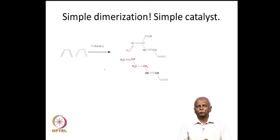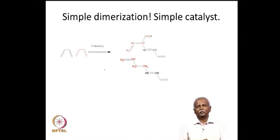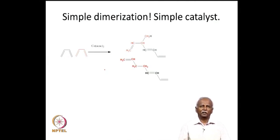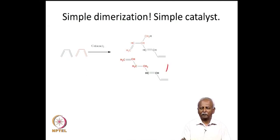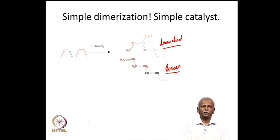Beyond mono-alkenes, reactions with multiple enes — dienes and trienes — are also known, operating on the same principles. An oxidative coupling reaction leads to the coupling of two dienes, which can form linear or branched products. These reactions are less studied than ethylene reactions because dienes are not as readily available as ethylene, but they are possible.